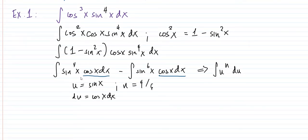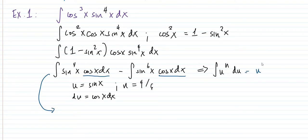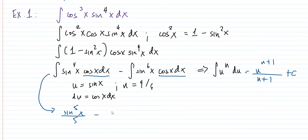By transformation — using the Type 1 technique — we can now integrate by the power formula: u raised to n+1 over n+1, plus C. So the answer is sine raised to 5x over 5, minus sine raised to 7x over 7, plus C. That would be the final answer.